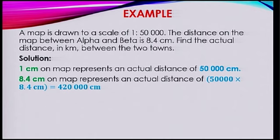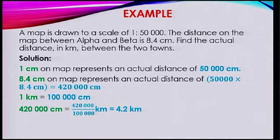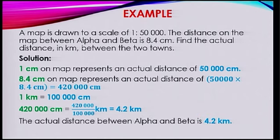But then you're asked to find the actual distance in km. You just need to convert it. 1 km is 100,000 cm. So 420,000 cm divided by 100,000, you're getting 4.2 km. Therefore the actual distance between alpha and beta is 4.2 km.